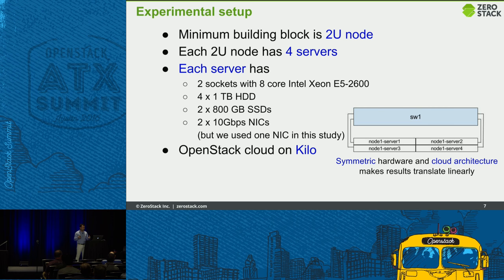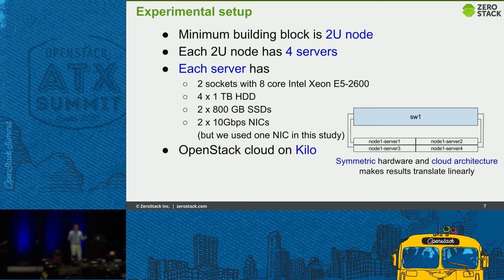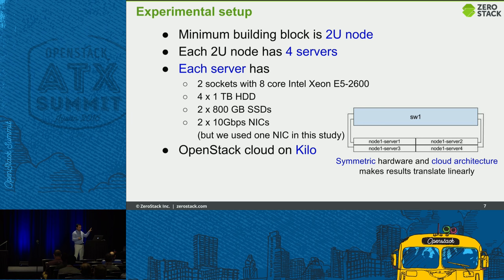For most experiments, we use this minimum building block — a 2U node with four servers. The configuration for each server has two sockets with eight cores, four HDDs, and two SSDs. Overall, the 2U block has 24 drives. Each server has two 10-gig NICs, and the OpenStack version is based on Kilo. This is the world's smallest private cloud you can get in one box — completely HA and fault-tolerant — on which you can run about 100 to 200 VMs depending on VM size.